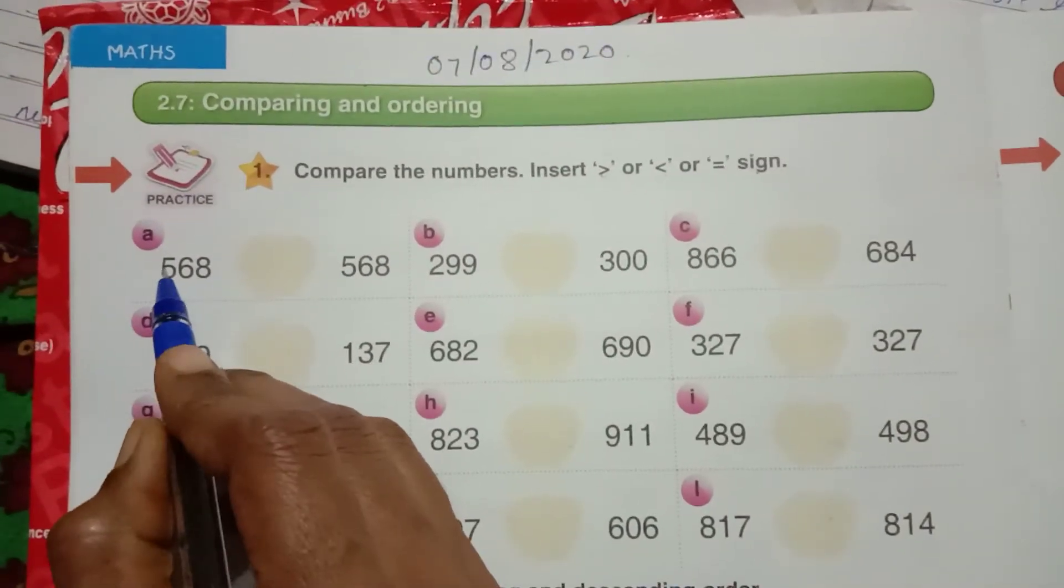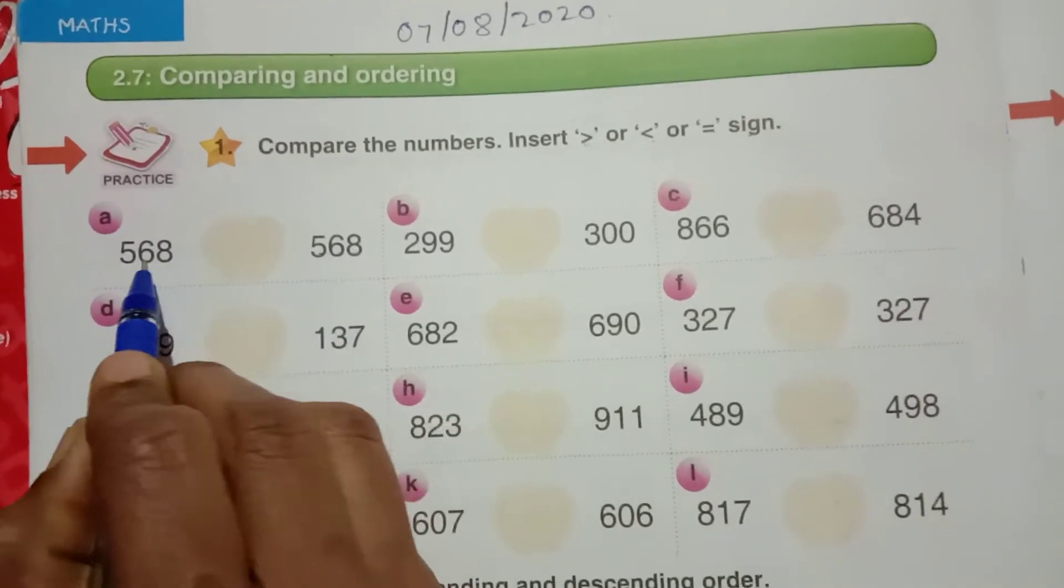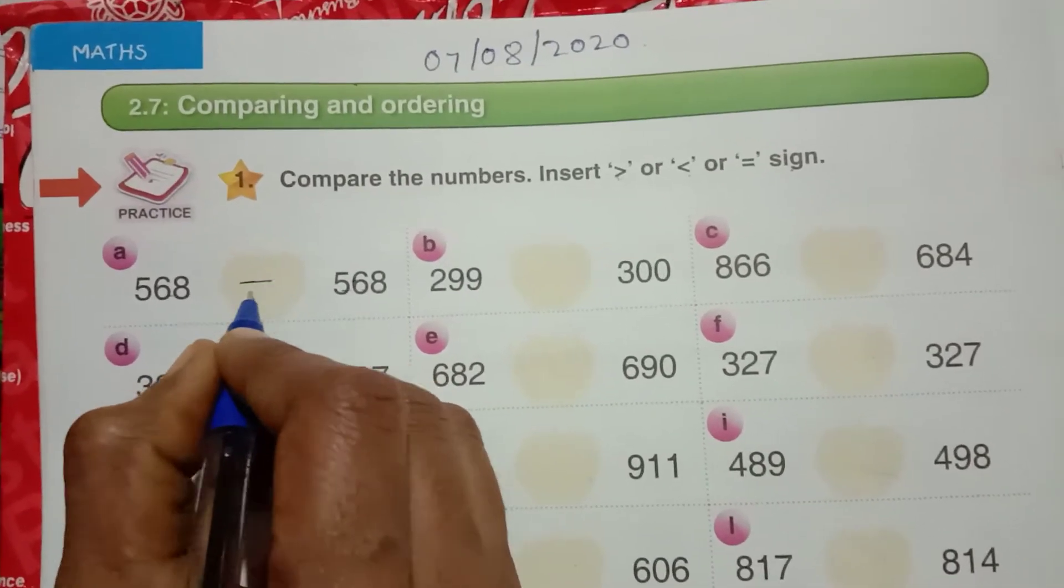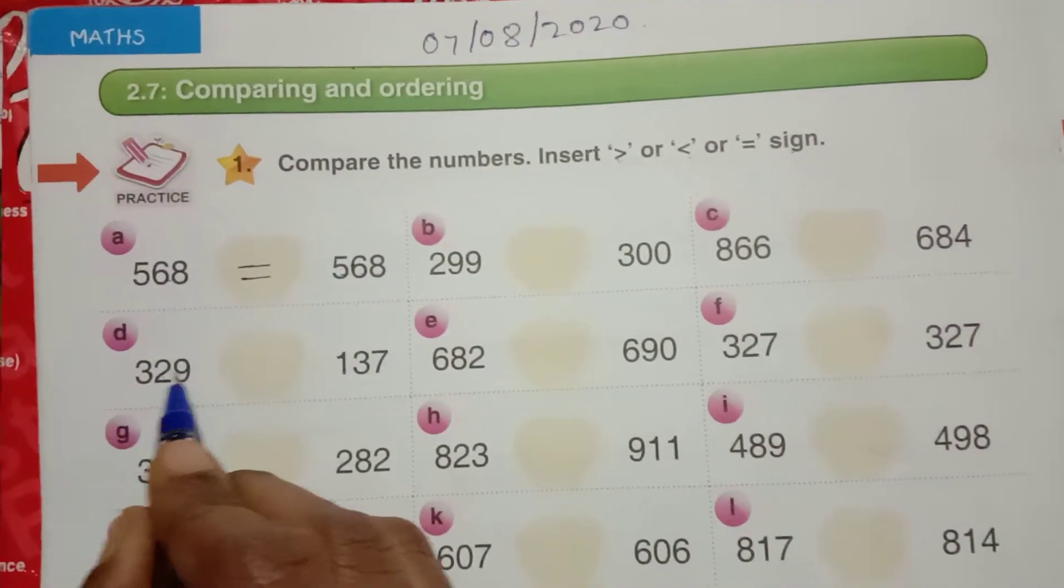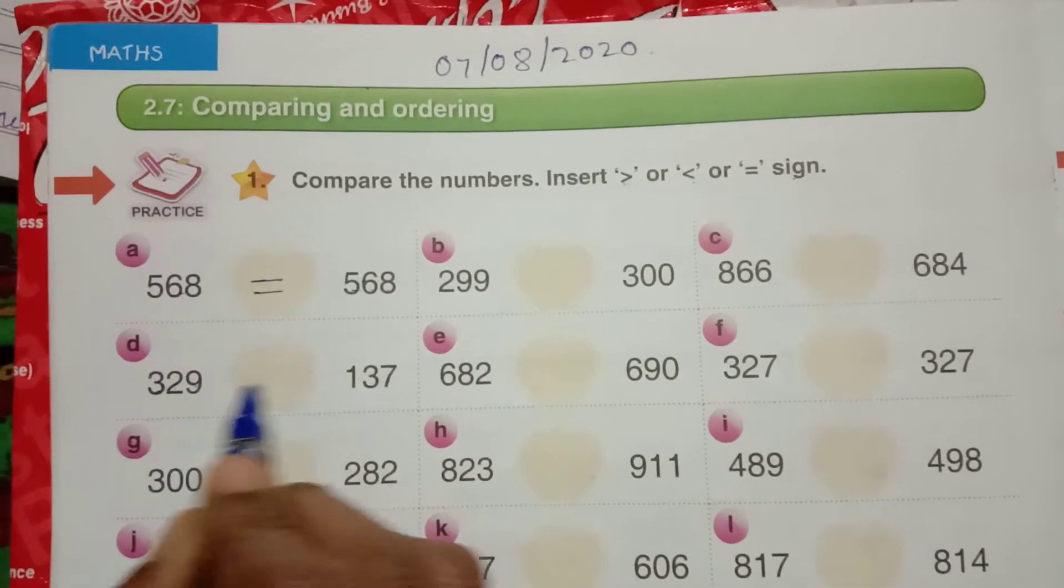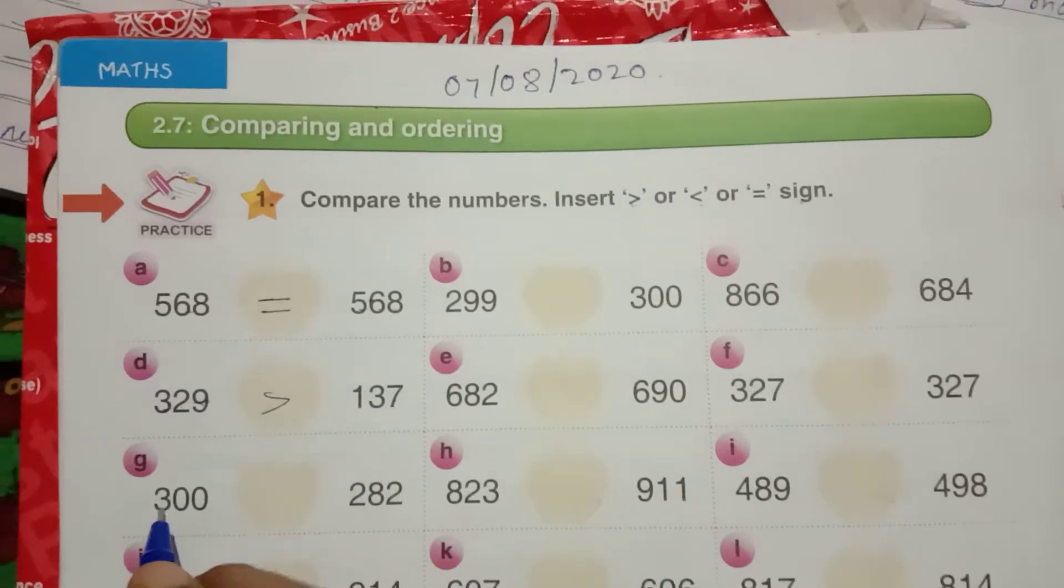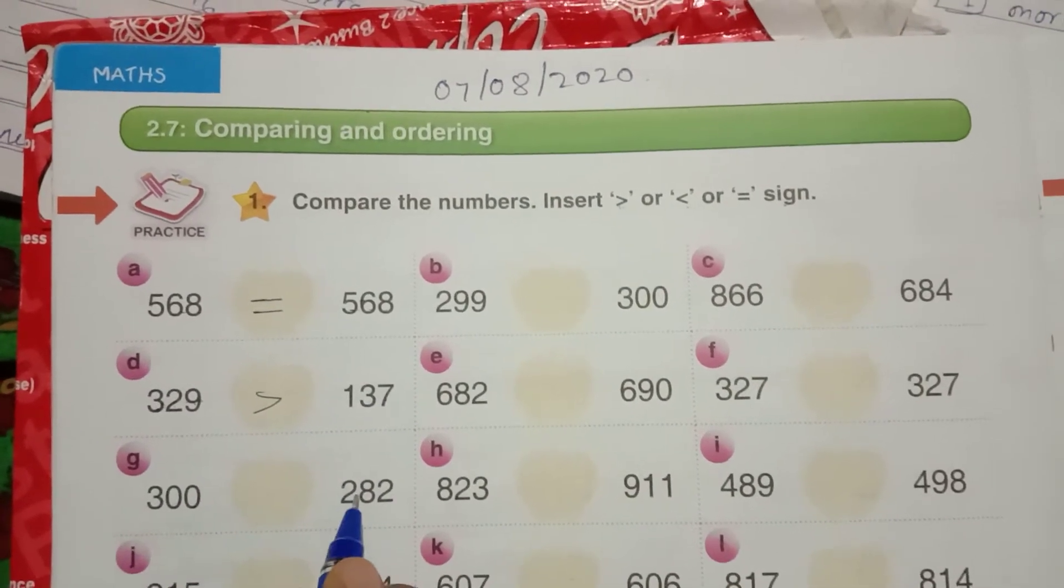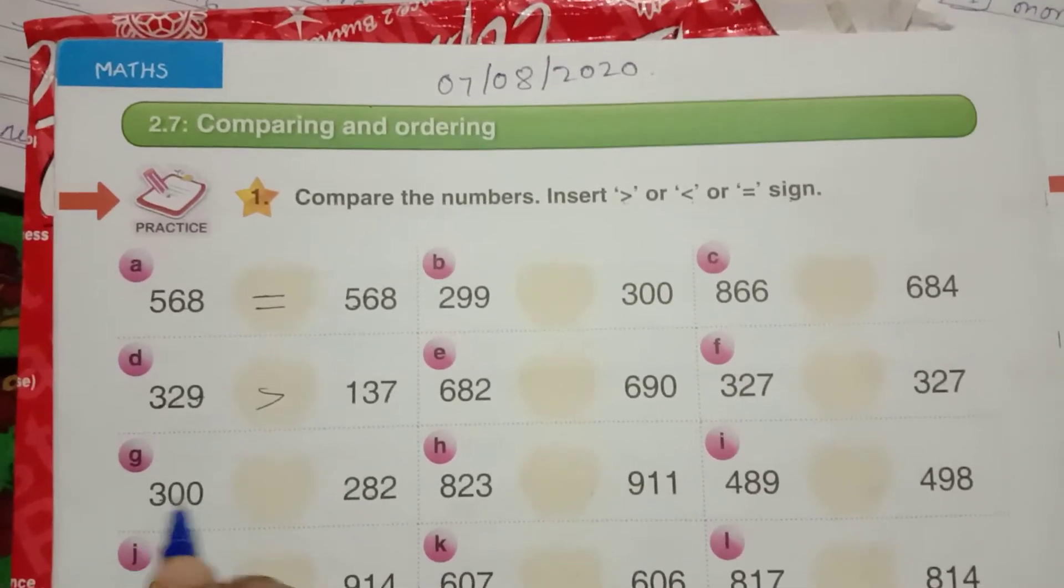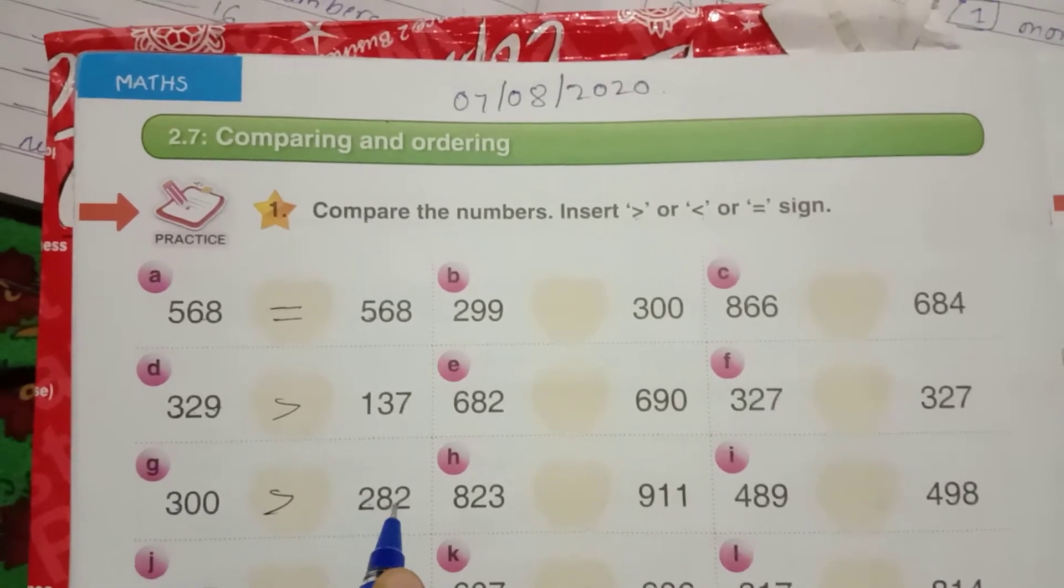First one, 568, here also 568, both numbers are same. Therefore here you insert equal sign. 329, 137. 3 is greater than 1, means 329 is greater than 137. 300 here, 282. 3 is greater than 2, means 300 is greater than 282.